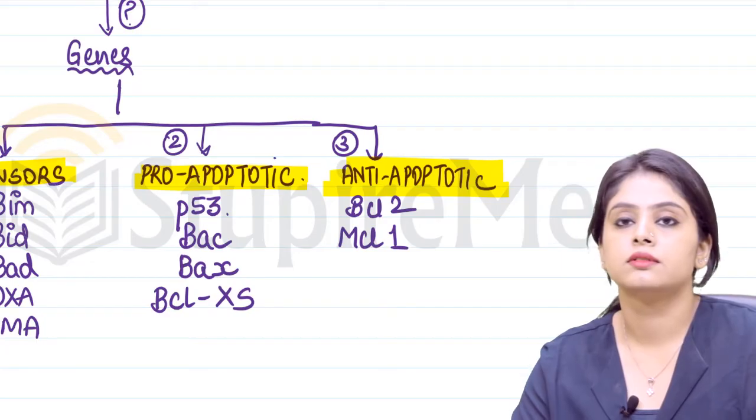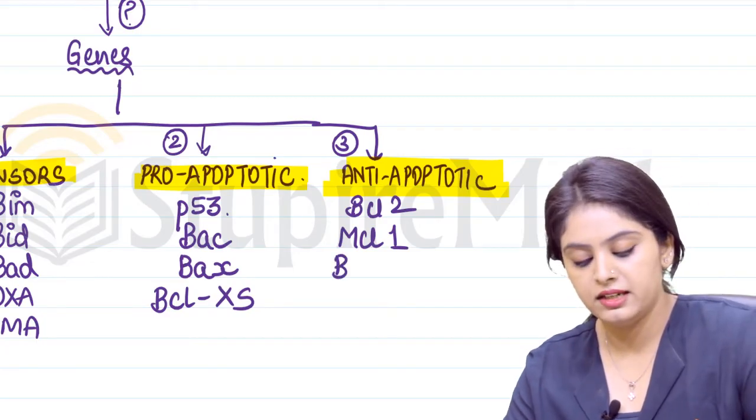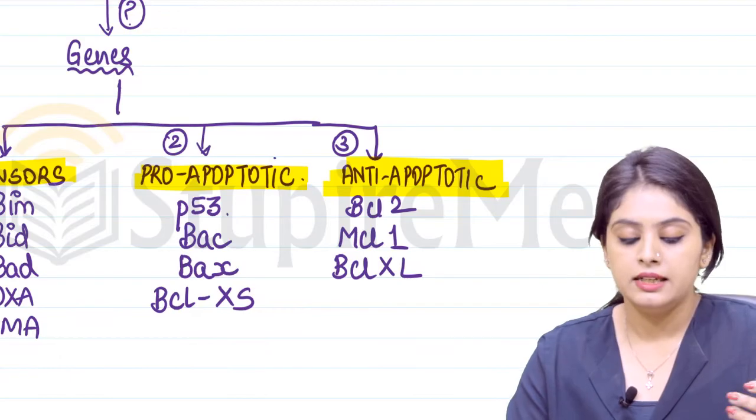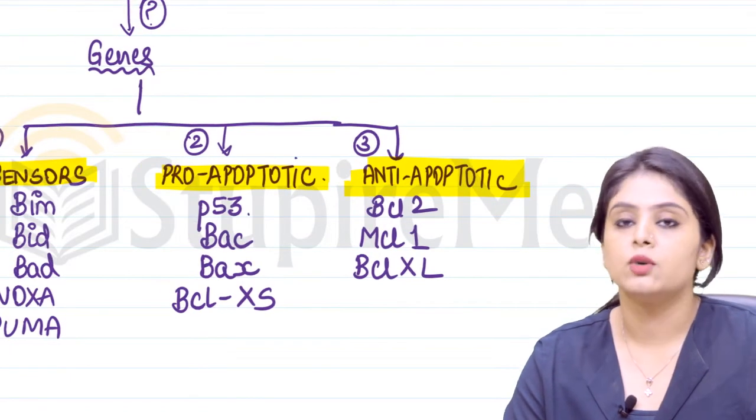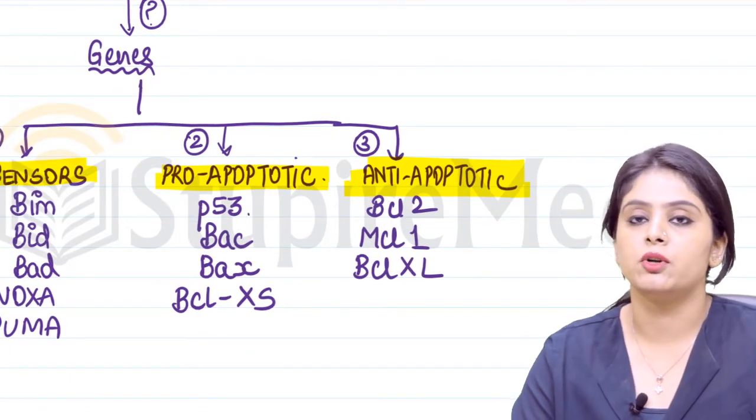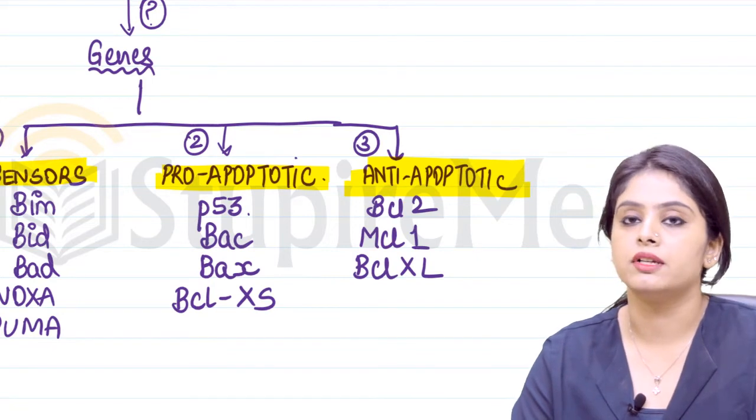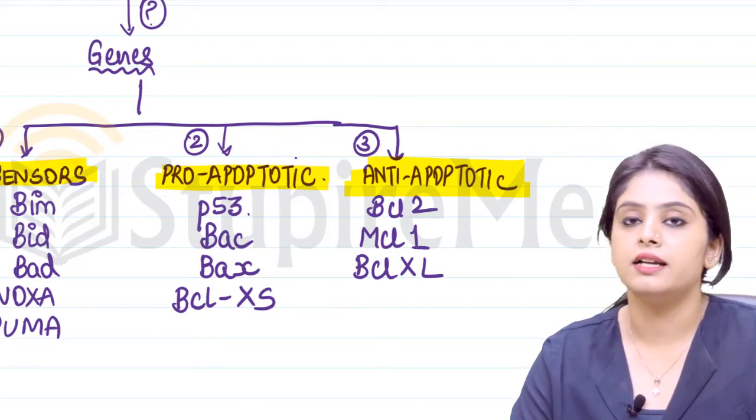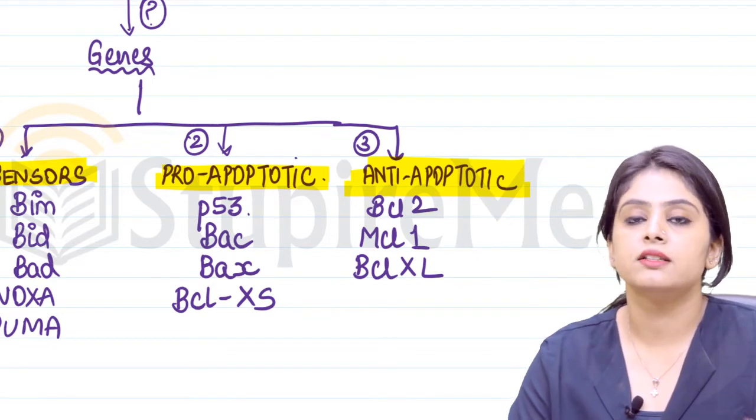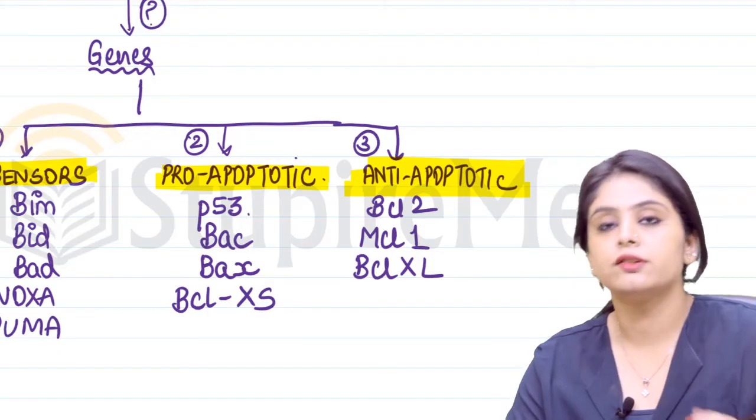Now very commonly the question comes: which of these is pro-apoptotic, which is anti-apoptotic? This list is confusing, I agree. How can we simplify this for our learning purpose?